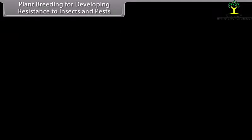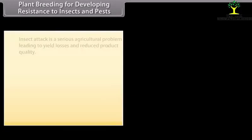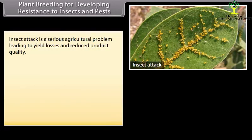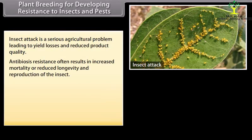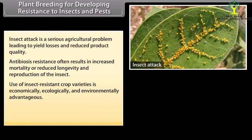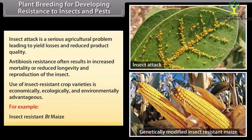Plant breeding for developing resistance to insects and pests: Insect attack is a serious agricultural problem leading to yield losses and reduced product quality. Antibiosis resistance often results in increased mortality or reduced longevity and reproduction of the insect. Use of insect-resistant crop varieties is economically, ecologically, and environmentally advantageous. For example, insect-resistant bt maize.